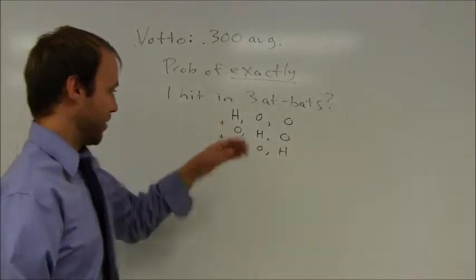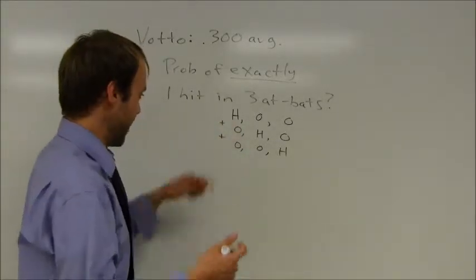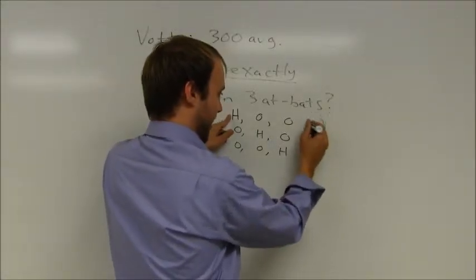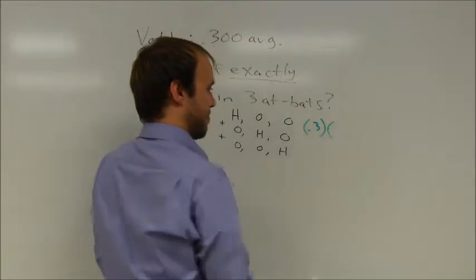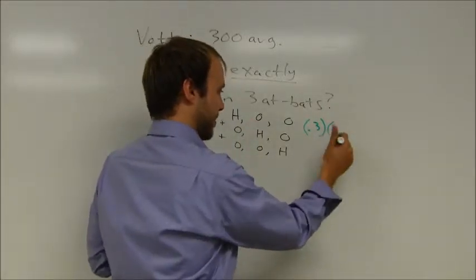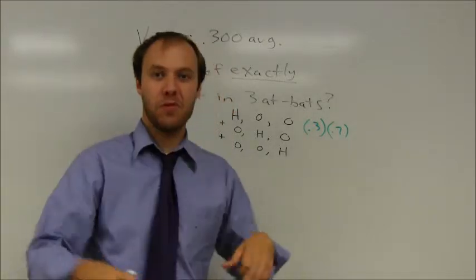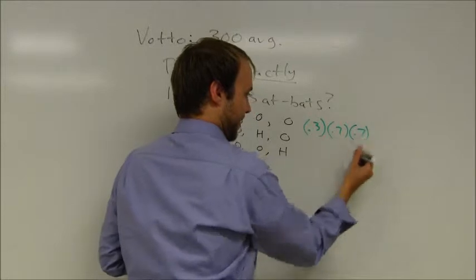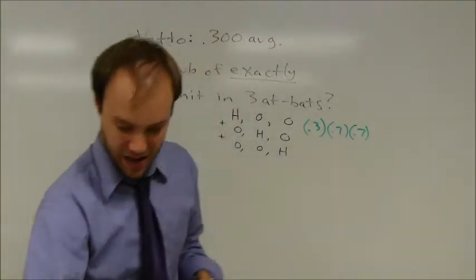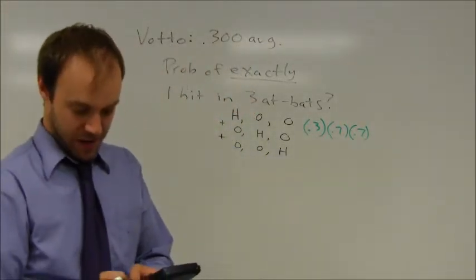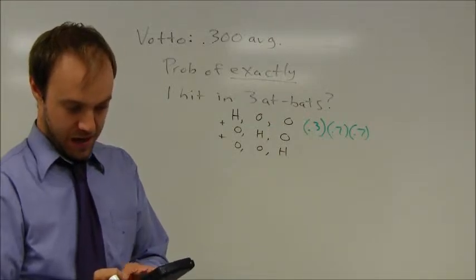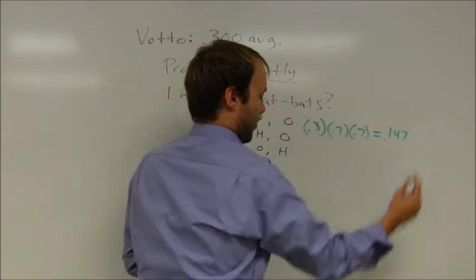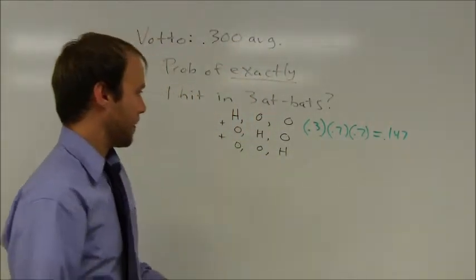Let me take a shot at going through this. The probability in his first at-bat that he makes a hit is .3, and that the next at-bat he makes an out, well that's going to be a 70% chance. That's the complement of the event, the opposite, and that he makes an out in the following at-bat. .3 times .7 times .7 equals .147.